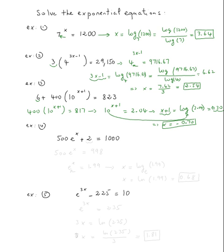For example four, we need to get rid of the two. So five hundred times e to the x equals one thousand minus two, which is nine ninety-eight. Now divide by five hundred: e to the x equals nine ninety-eight divided by five hundred, which is one point nine nine. We use x equals log base e of one point nine nine, but remember log base e is just ln. So ln of one point ninety-nine equals zero point sixty-eight — use your calculator and that's the answer.